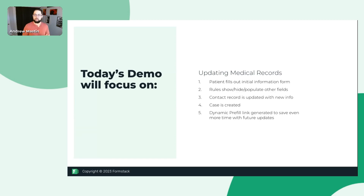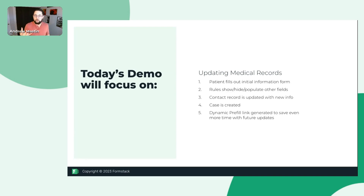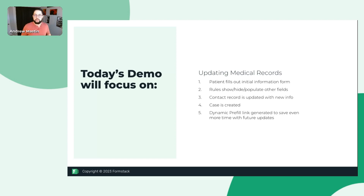We've sent them their own unique pre-filled link. They click on it and their information is already populated for the most part. But then, based on some of the information they're updating or selecting, we're going to see different fields show and disappear. It will then either create a new record or, in this case since it's a pre-fill, update their contact information. It's also going to trigger a Salesforce case so that someone else internally knows they need to follow through, and it's assigned accordingly.